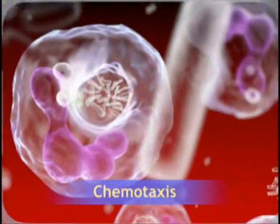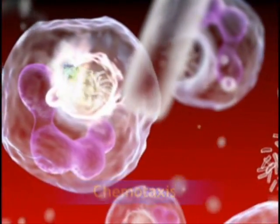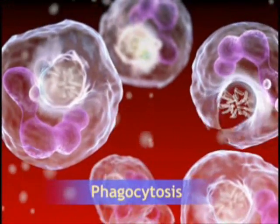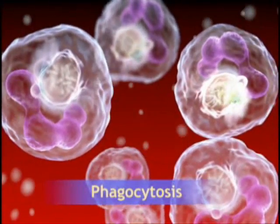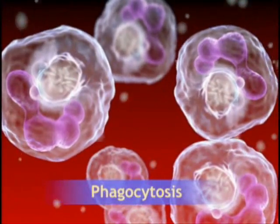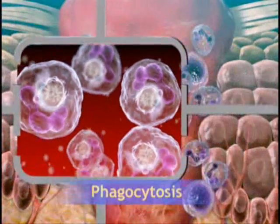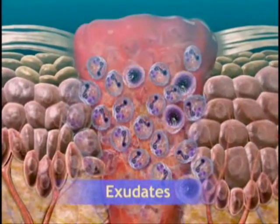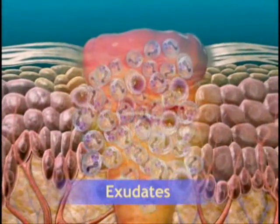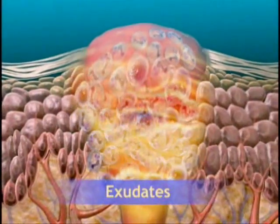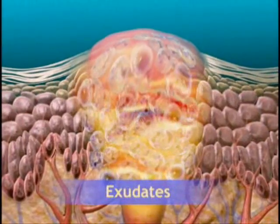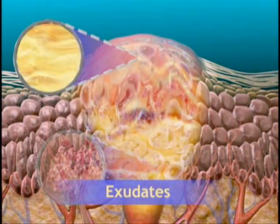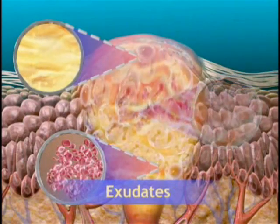The cellular stage culminates in the leukocytes engulfing and degrading bacteria and cellular debris in a process called phagocytosis. Products of phagocytosis, along with plasma and blood cells, form exudates, which accumulate causing swelling and pain. Exudates are composed of serous fluid, red blood cells, fibrinogen or tissue debris, and white blood cell breakdown products.